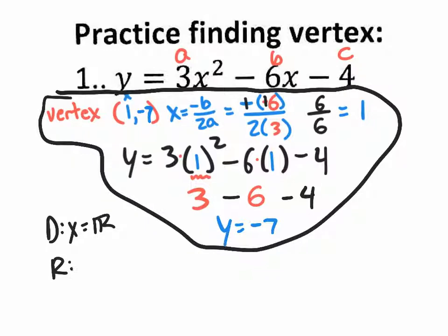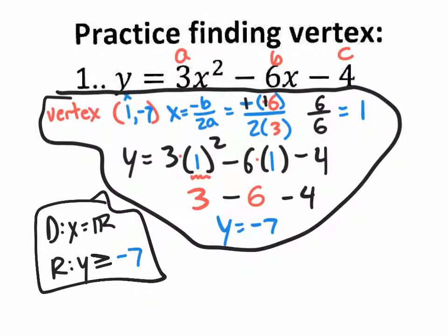What if I asked you for the range? The range is either going to be above or below the vertex y value. This is definitely above because it's positive — so it is opening up. So I know it's going to be y is greater than or equal to the vertex y value, which is negative 7. That's your domain and range right there, and we found them without even looking at the graph.